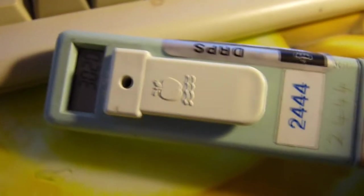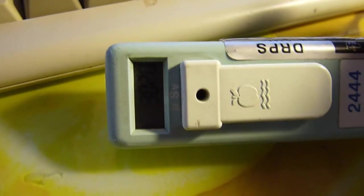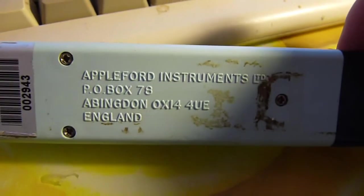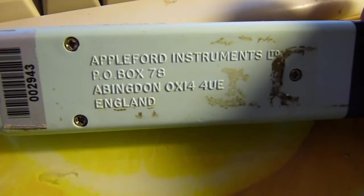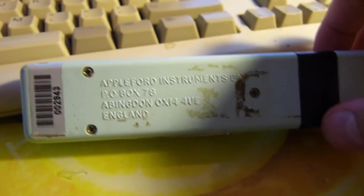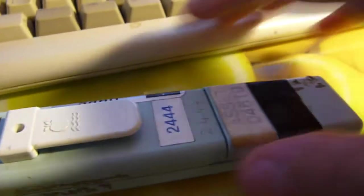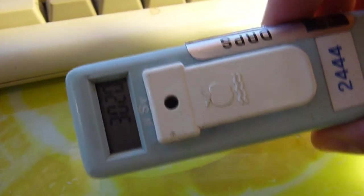I screwed up, I missed one. This is a dose meter I got for about 15 pounds a good few years ago, made by Applefoot Instruments England in Abrington. I'd need to stick that into Google to see exactly where that is. What this is is a Geiger tube dose meter, probably